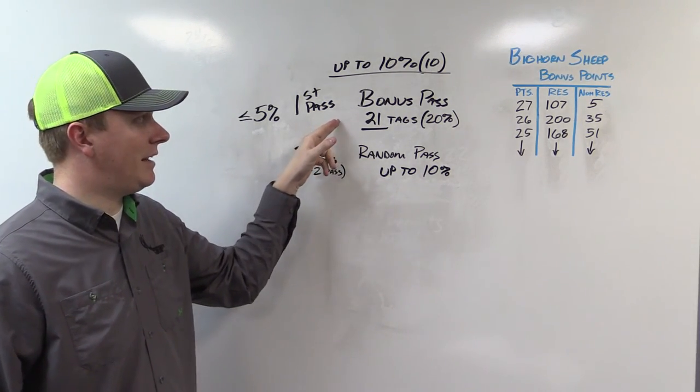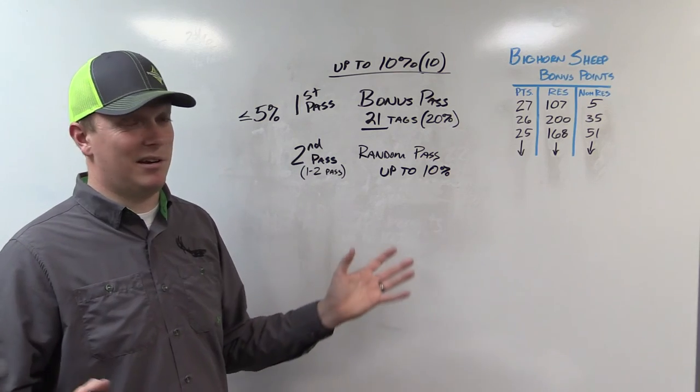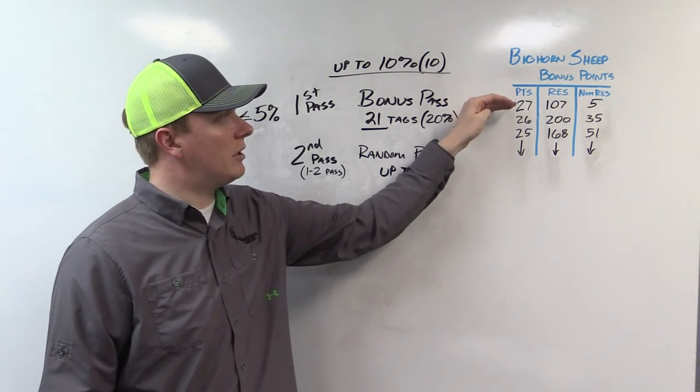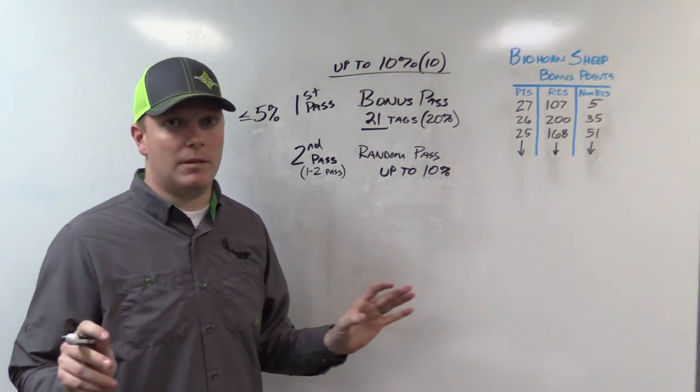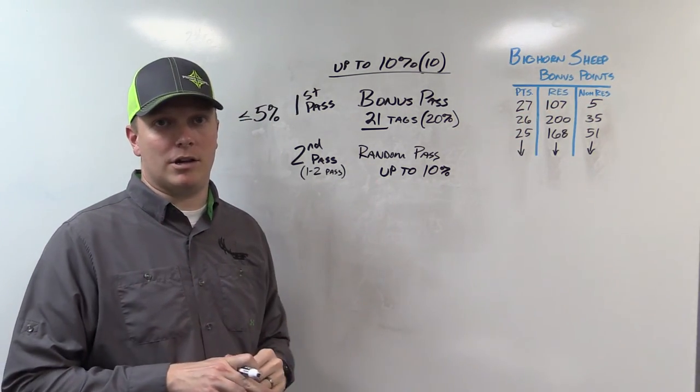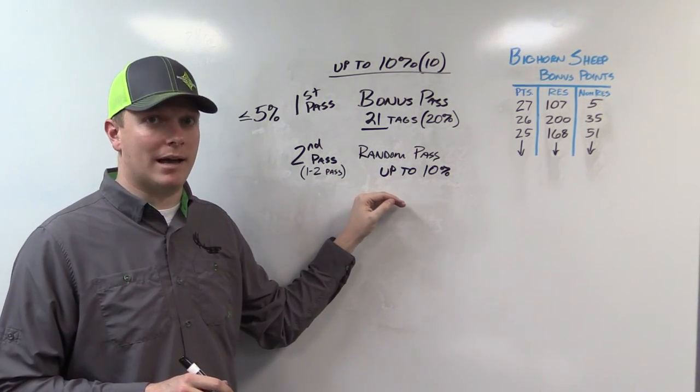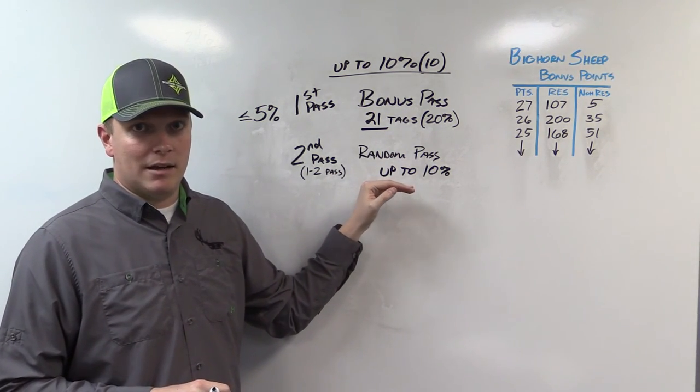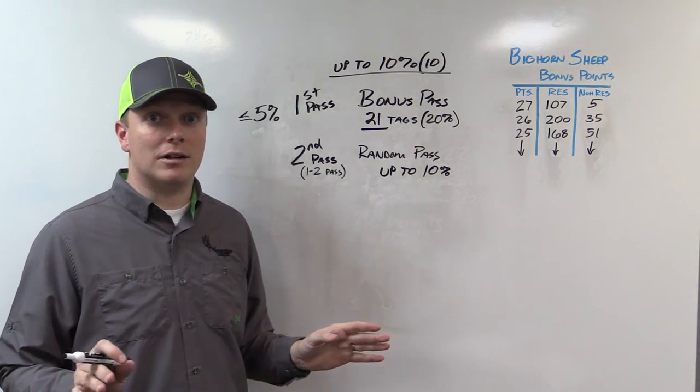One more note about the bonus pass. If for some reason all of these applicants apply for the same unit that only has say two tags, and those two tags are given to the first two guys and everybody else applied to the same, they would bump down to the next bonus point level and start awarding those guys. That's hypothetical. It's not going to happen because most of these 112 guys are applying for units all over the state just trying to draw a tag. What that does though in the random pass, if your tags are taken even if you're first out of the gate with your first choice, if your bonus point holders took your tag you're out. You have no chance.